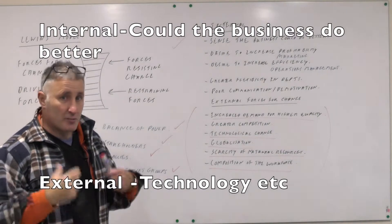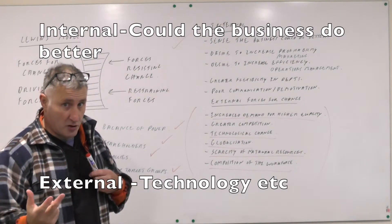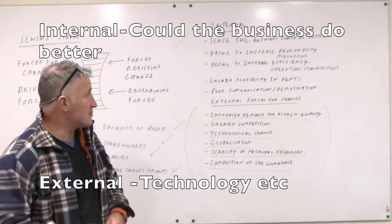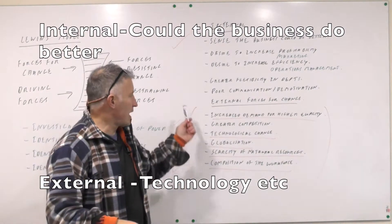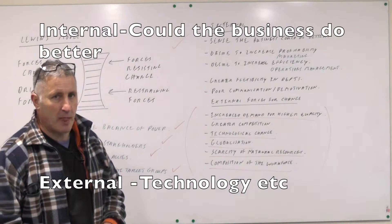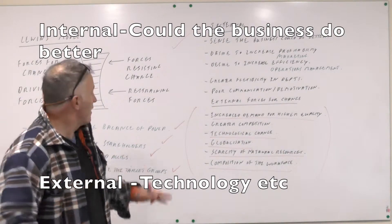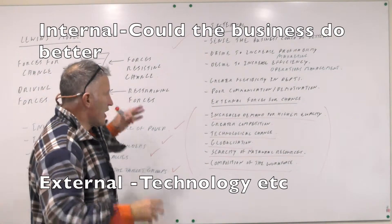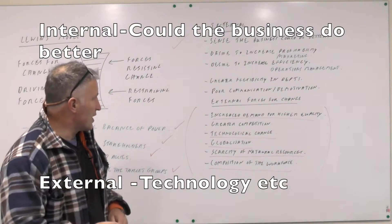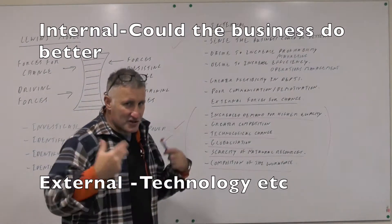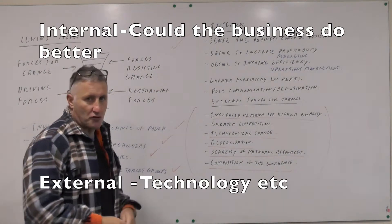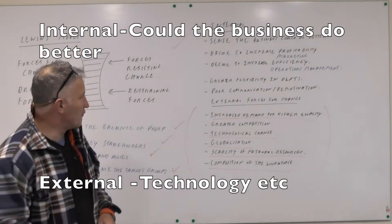Could the business do better? Could it make more money — is that a marketing issue? Could the business become more efficient — is that an operations management issue? Greater flexibility? Maybe there's poor motivation or poor communication within the firm. So therefore you need to get together, use Lewin's model, and discuss all of these things.